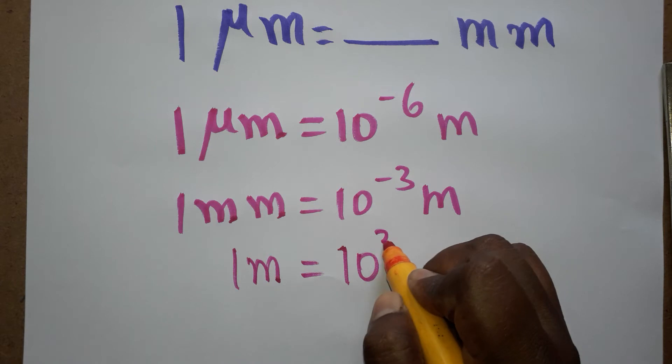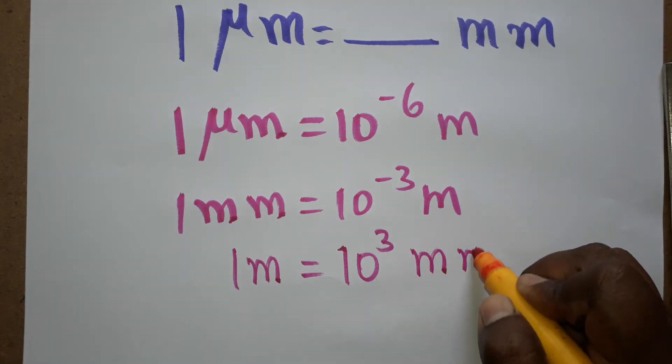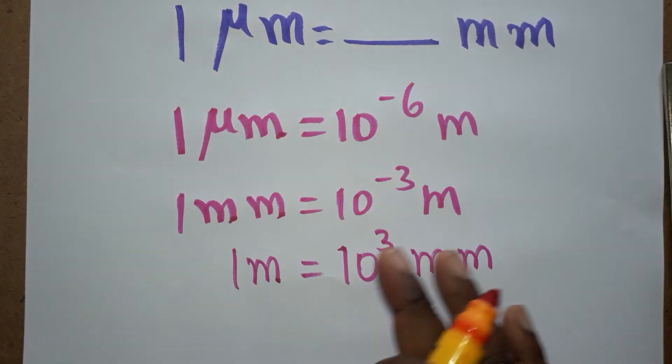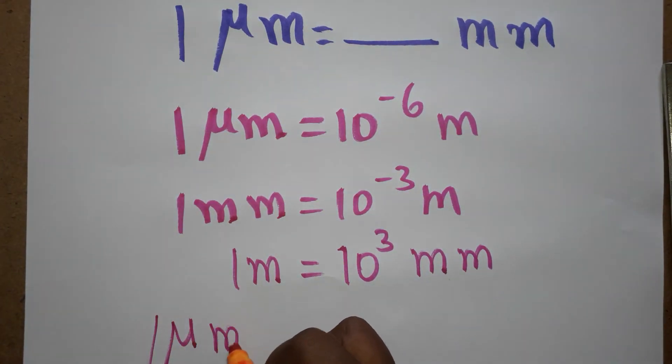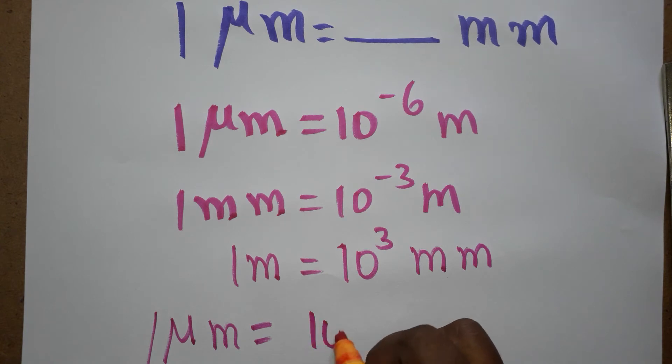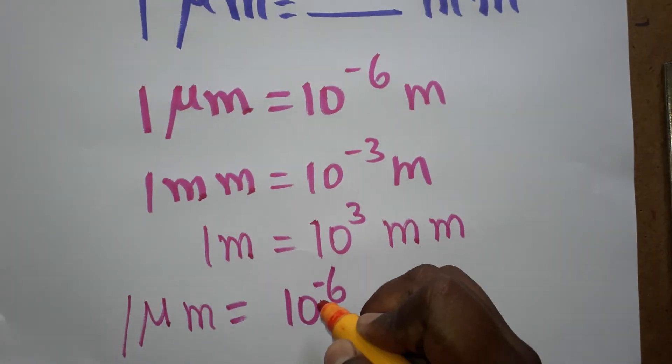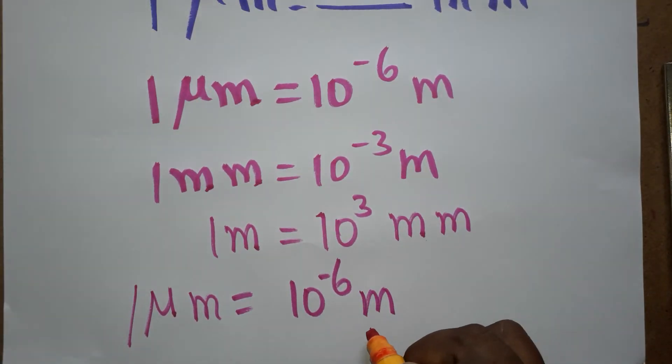1000 means 10^3 millimeters. We have to write out the calculation to solve this easily. 1 micrometer equals 10^-6 meter, and 1 meter equals 10^3 millimeters.